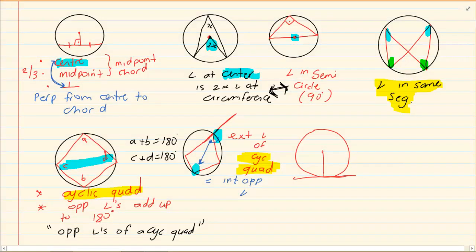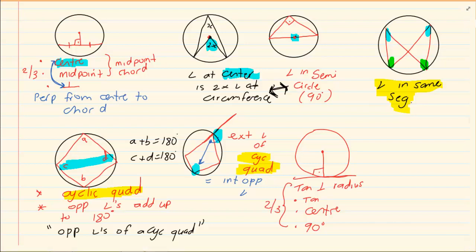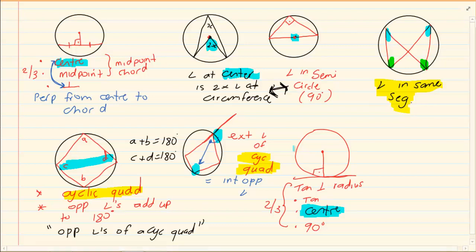The next set is the three tangent rules. First: tangent perpendicular to radius — exactly as its name says. You have a tangent, it is 90 degrees, and you have a radius. Again it works like the first theorem: given any 2 of the 3, you can immediately assume the third. This is another theorem working with the center, so when you read that O is the center, you know you are working with angle at center and tangent perpendicular to radius. You must link your theorems to the information given.